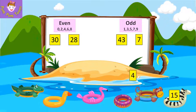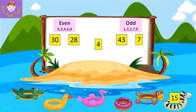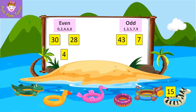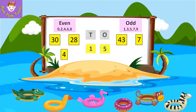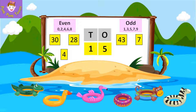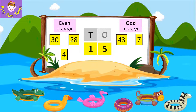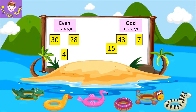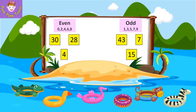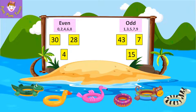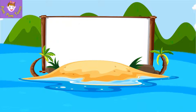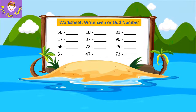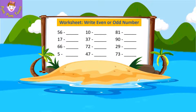4 is an even number. 15 — it has 5 in the one's place, so 15 is an odd number. Worksheet: write even or odd number.